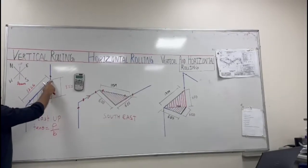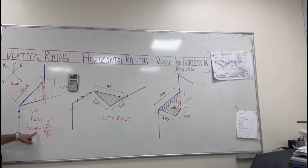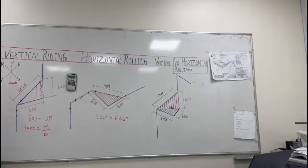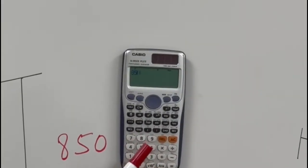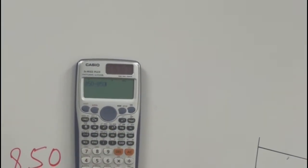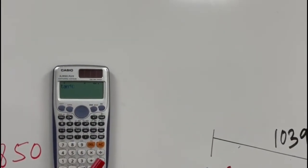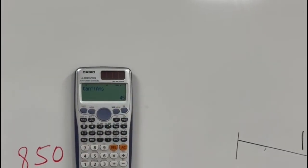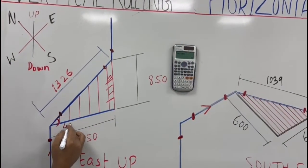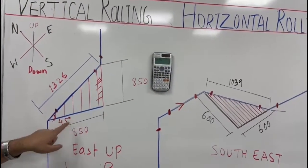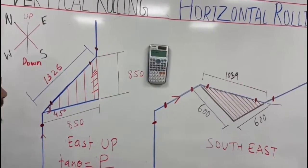It is going east then up — 850, then up 850. Using the formula tan theta = P/B, we have 850 divided by 850, which equals 1. Shift tan gives us 45 degrees. So here the rolling is 45 degrees — rolling to east then up.